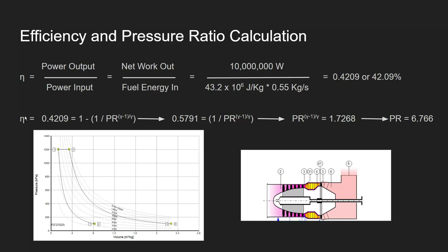Using our efficiency of 42.09% in the pressure ratio expression: 1 − 1/PR^((γ−1)/γ) = 0.4209, so 1/PR^((γ−1)/γ) = 0.5791. Taking the reciprocal and raising to the power γ/(γ−1), we find the pressure ratio PR = 6.766. We now have maximum temperature 1200 K, efficiency 42.09%, and pressure ratio 6.766.